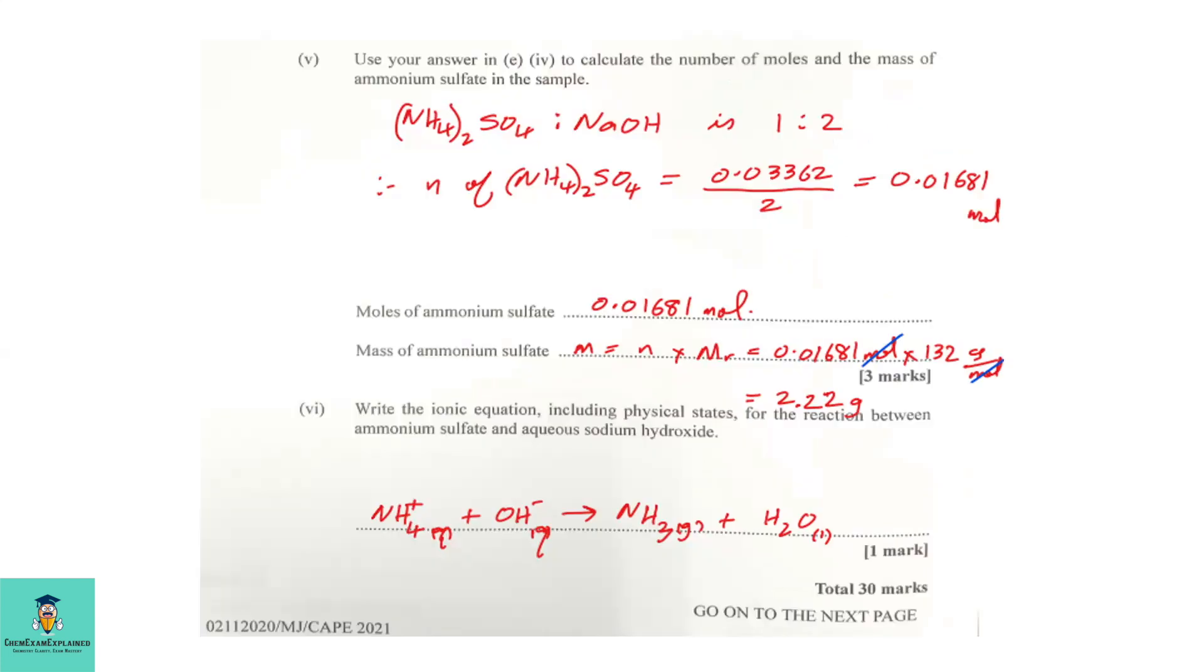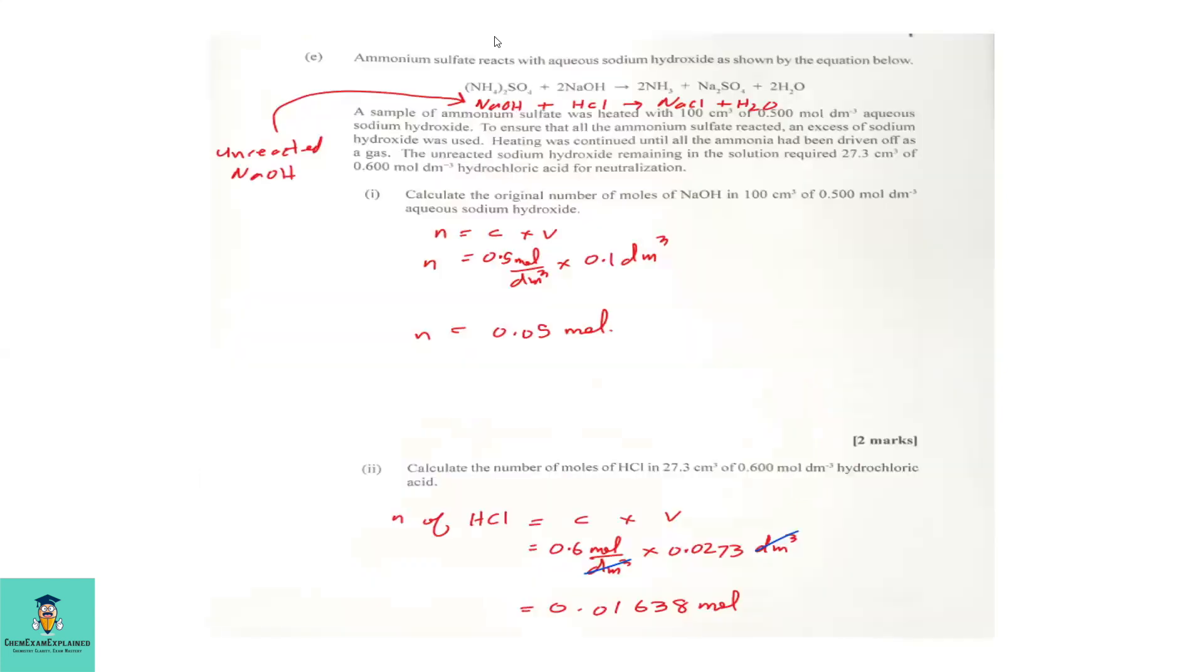Let's look back at the equation to see how we find the moles of ammonium sulfate, knowing the moles of sodium hydroxide reacted. If you look back at the original equation, you'll see that the mole ratio between ammonium sulfate and the excess sodium hydroxide is 1 to 2. So, if we know the moles of sodium hydroxide reacted, we can find the moles of ammonium sulfate by simply halving the moles.